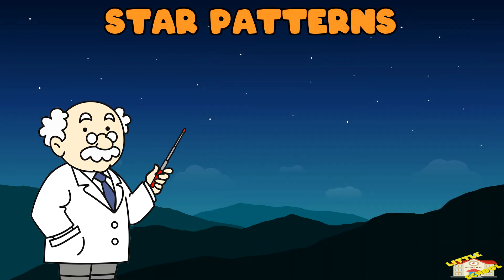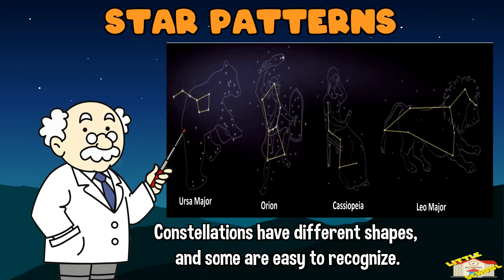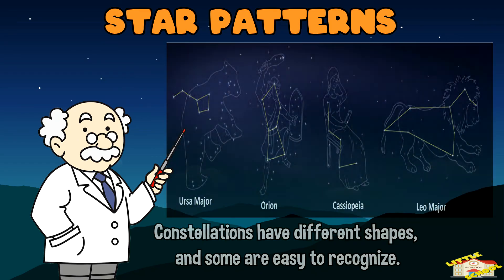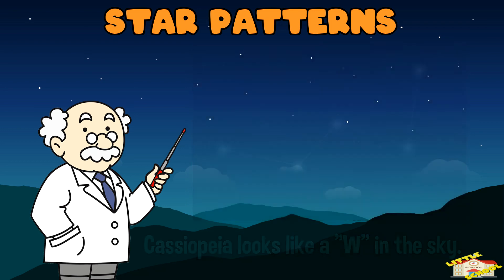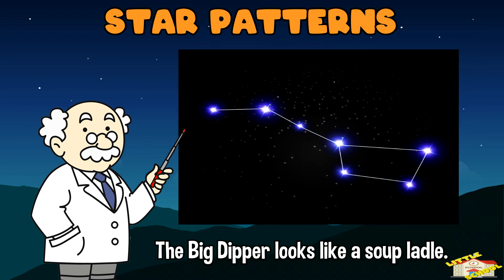Star patterns: constellations have different shapes and some are easy to recognize. Cassiopeia looks like a W in the sky, and the Big Dipper looks like a soup ladle.